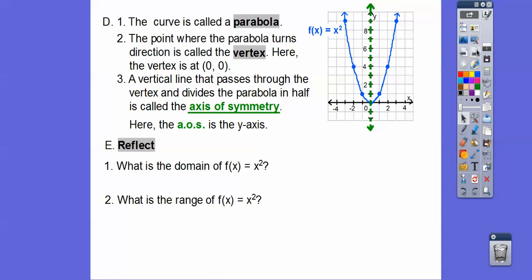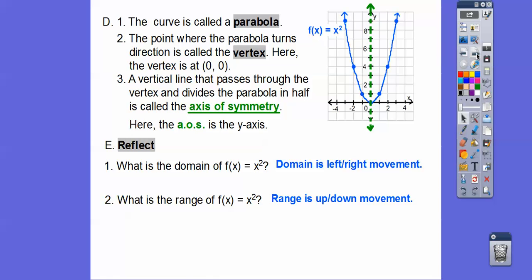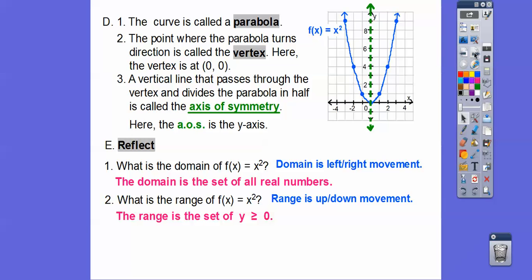What's the domain? Domain is how far the graph goes left and right. This graph goes left forever and right forever — there are no restrictions on x, you can plug in anything and square it. So the domain is all real numbers. The range is up and down movement. It goes up forever but stops at y equals 0, so the range is y greater than or equal to zero.